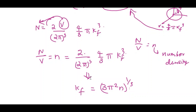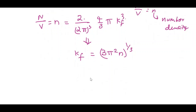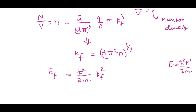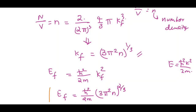Now we are at the final stage. Since energy E equals ℏ²k²/2m, we write EF equal to ℏ²kF²/2m. We already know kF, so substituting: EF equals (ℏ²/2m) times (3π²n)^(2/3). This is the equation for Fermi energy.